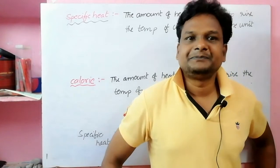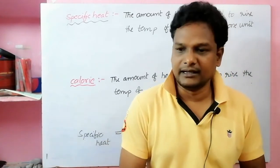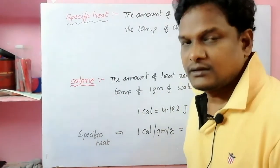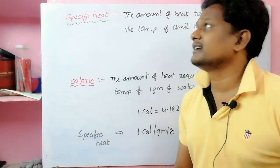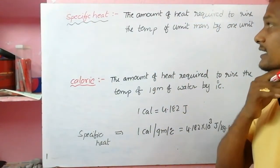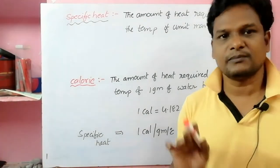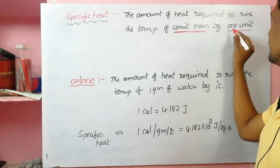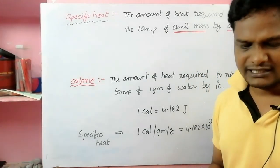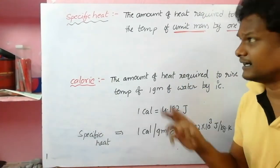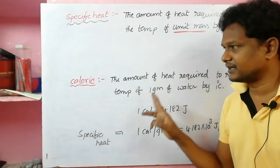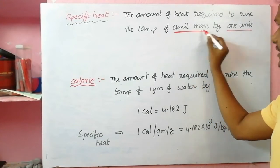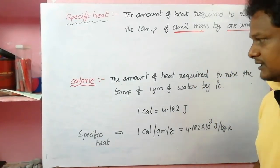Welcome students. Today's topic is specific heat definition and calorie definition. Specific heat definition is the amount of heat required to raise the temperature of unit mass by one degree. Key terms: one unit mass, one unit degree rise in temperature. That is specific heat definition.